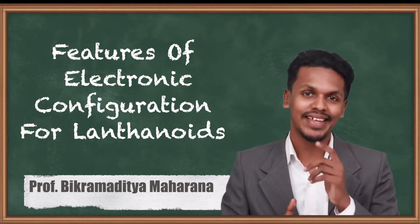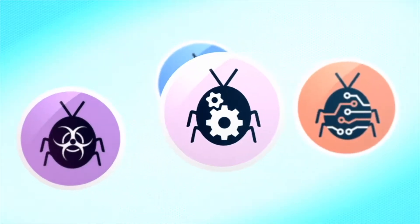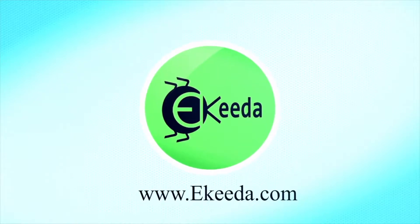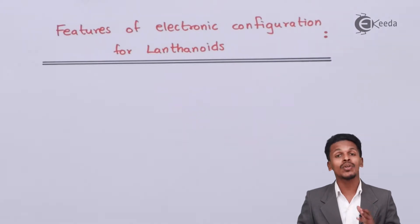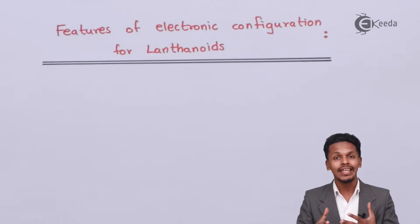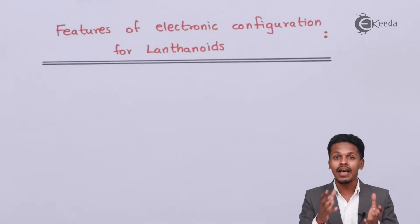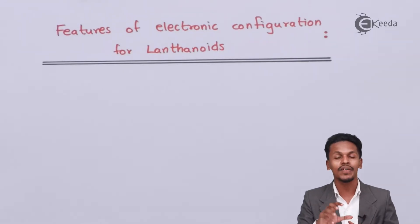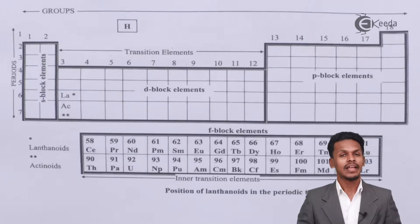In this topic I'm going to talk about the features of the electronic configuration for lanthanoids — specifically how the electron configuration is done and why the electron enters the d orbital rather than the 4f orbital. We should also understand the periodic table as context.